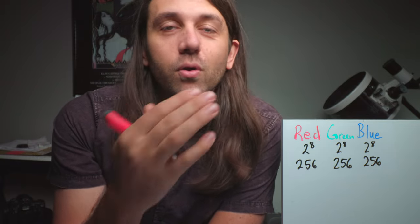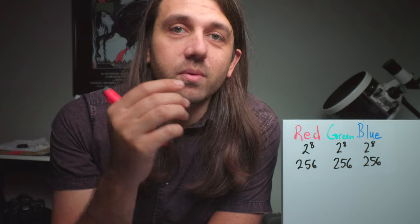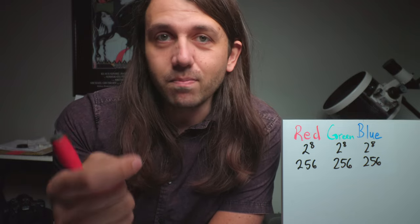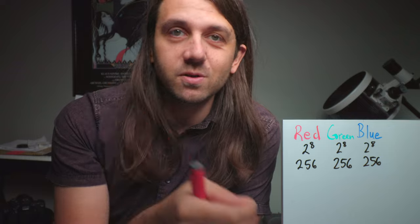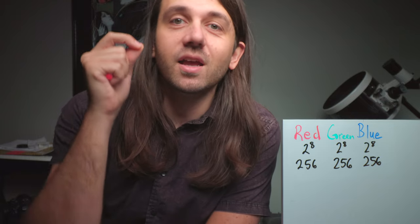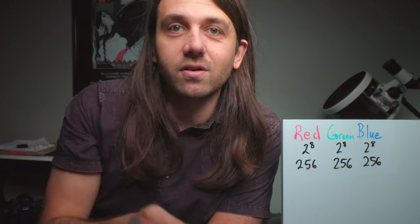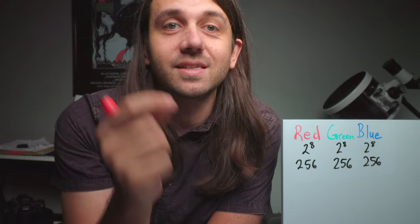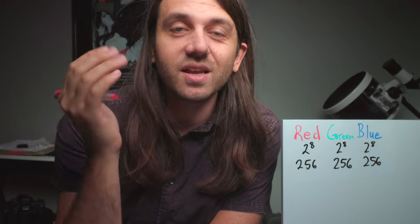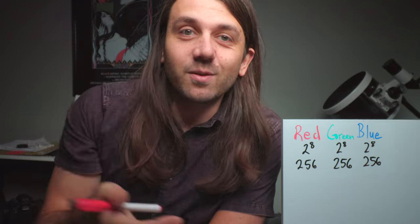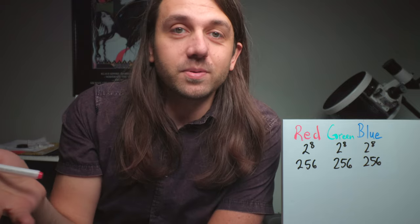And to arrive at the total number of possible colors from red, green, and blue, each getting eight bits to work with, we would multiply 256 by 256 by 256 to arrive at 16,777,216 possible color variations, which for most kinds of images is plenty to accurately represent the scene.